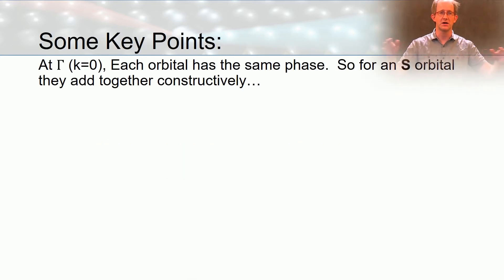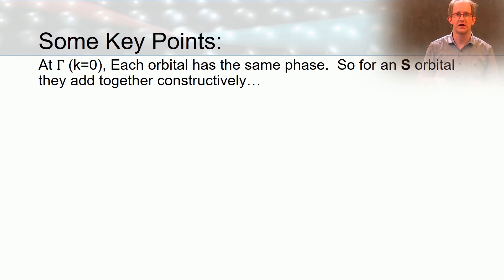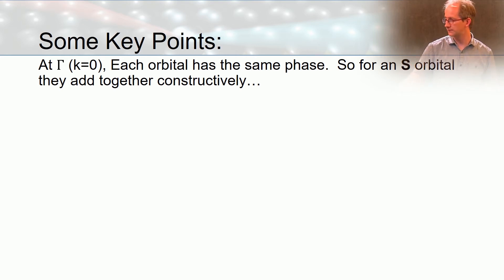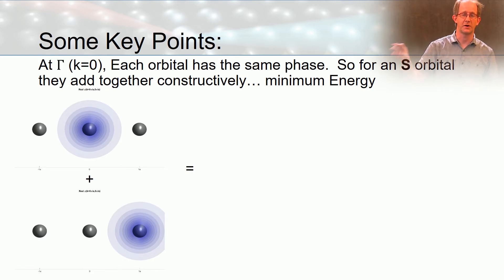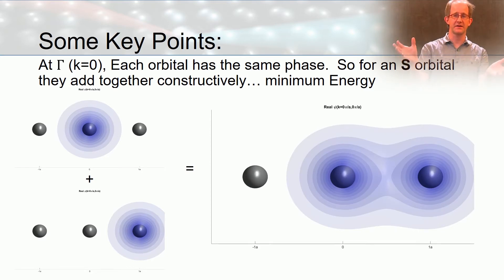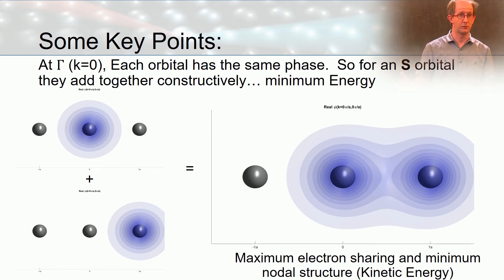In the last lecture we had a line of atoms, each with an s orbital, and we made a Bloch wave out of them — giving our wave functions some crystal momentum, a spatially dependent phase factor. There were two special points: the gamma point, where k equals zero and there's no crystal momentum. For an s orbital at the gamma point, the wave functions add together constructively. With three atoms in a line, the orbitals add constructively, giving extra electron density and extra electron sharing in the middle. There's no node, so there's a minimum in kinetic energy, making this a minimum in the energy structure.